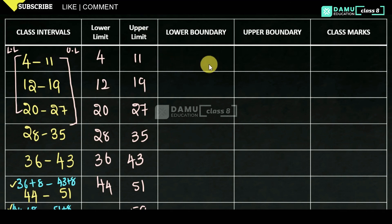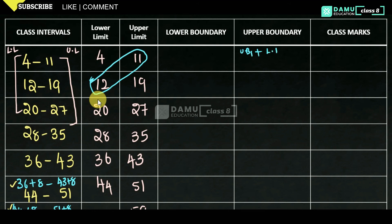Now we calculate the class boundaries. The upper boundary of the first class interval is the average of the upper limit of the first class and the lower limit of the second class: (11 + 12) / 2 = 23 / 2 = 11.5. The lower boundary of the second class is also (11 + 12) / 2 = 11.5, so the lower and upper boundaries at this point are the same.